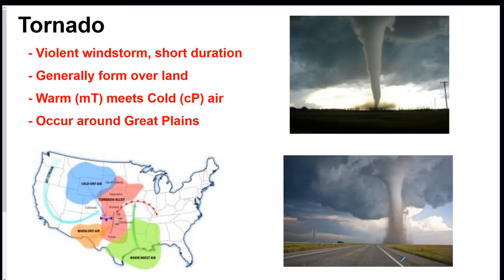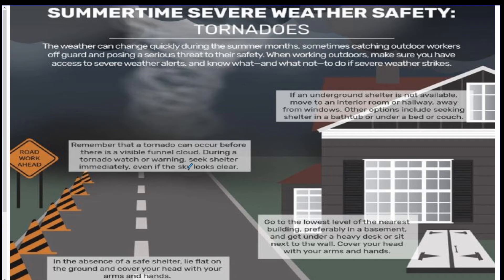The next storm is a tornado, which is a giant windstorm. It doesn't last very long. Tornadoes normally form over land from an MT air mass and a CP air mass interacting over the central United States, over the Great Plains. Ways to be safe during a tornado: number one is go into a basement. If there's no basement, get into the center of the building on the lowest floor possible. Cover yourself with something heavy, get into a bathtub or an archway — a very stable area of the building.